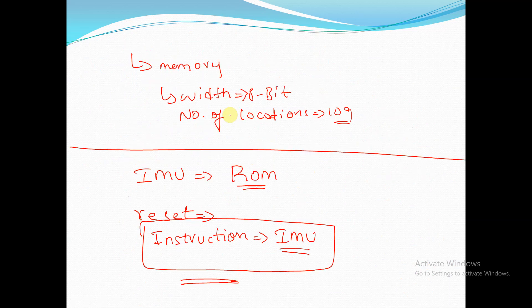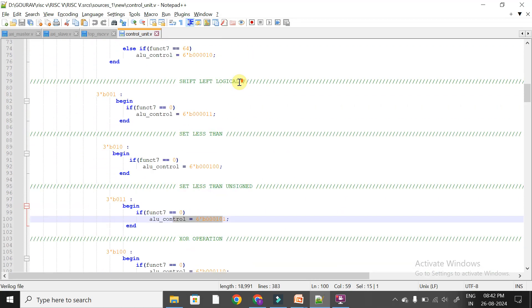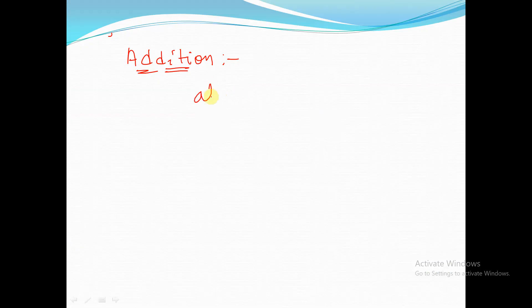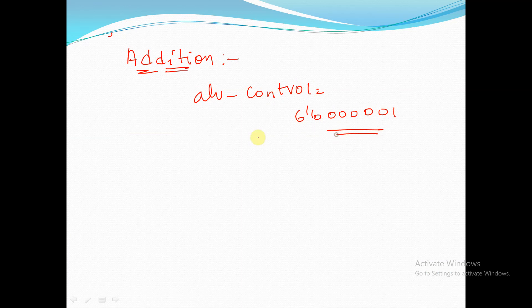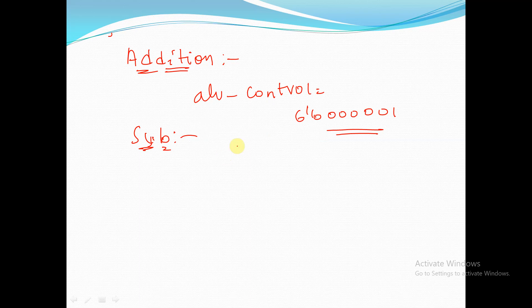To summarize: for addition, with funct3=000 and funct7=0, ALU control is 6'b000001. For subtraction, with funct3=000 and funct7=0100000, ALU control is 6'b000010. Depending on the type of operation determined by funct7 and funct3, a specific ALU control signal value is assigned.